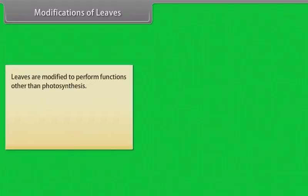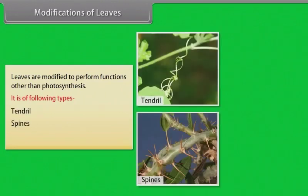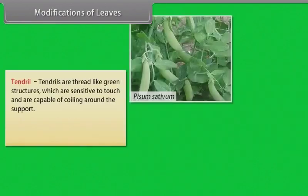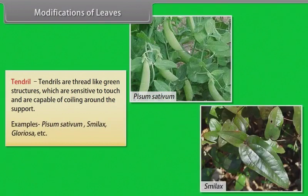Modifications of leaves. Leaves are modified to perform functions other than photosynthesis. It is of following types: tendril, spines, and food storage. Tendril: tendrils are thread-like green structures which are sensitive to touch and are capable of coiling around the support. Examples: Pisum sativum, Smilax, Gloriosa.